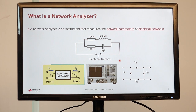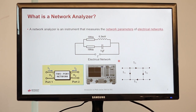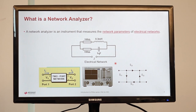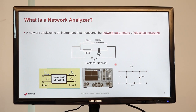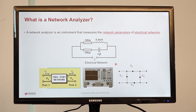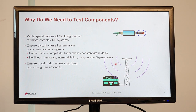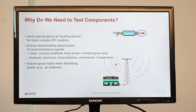A network analyzer is a general purpose instrument used for characterizing RF devices. Characterization can be as simple as insertion loss or insertion phase measurements, or as complex as noise figure or error vector magnitude measurements. These test components go into bigger systems, so we need to understand how each building block is behaving. Vector network analyzers help us characterize each of those building blocks.